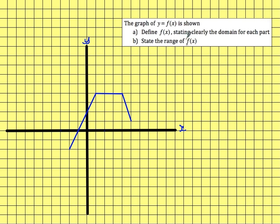So this question is the other way around. The graph of y equals f(x) is shown — we need to define f(x), stating clearly the domain for each part, and then at the end we'll state the range of the function. The first part is this bit here, and it's a straight line with a gradient of 2 and a y-intercept of 2, so f(x) must be 2x plus 2, and we're looking at values of x coming from minus 2 up to 1.